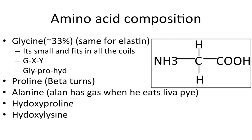A common type of question that comes up about collagen is about the amino acid composition. So here are a couple things you definitely have to know: glycine makes up the majority of the amino acids. About 33% of the amino acids are glycine, and that's the same for elastin.